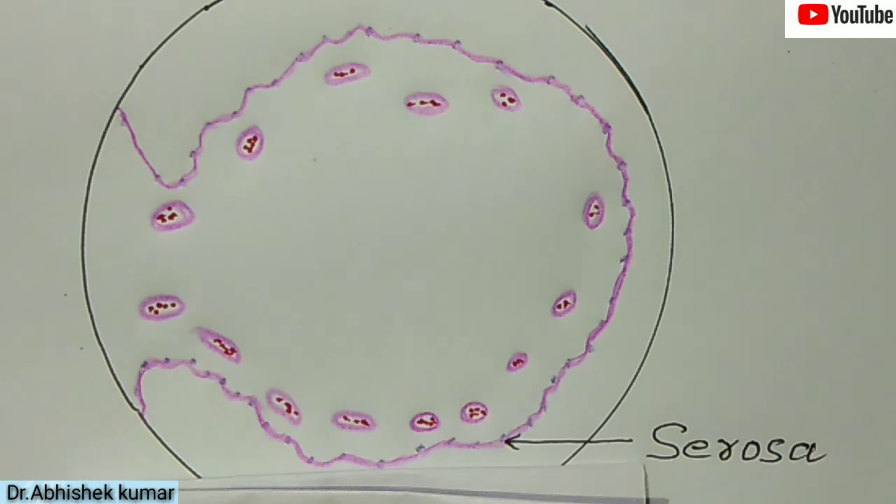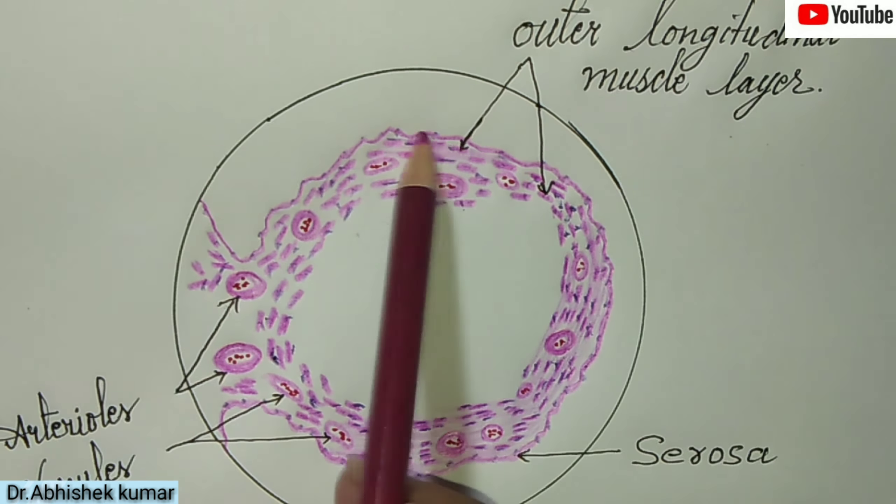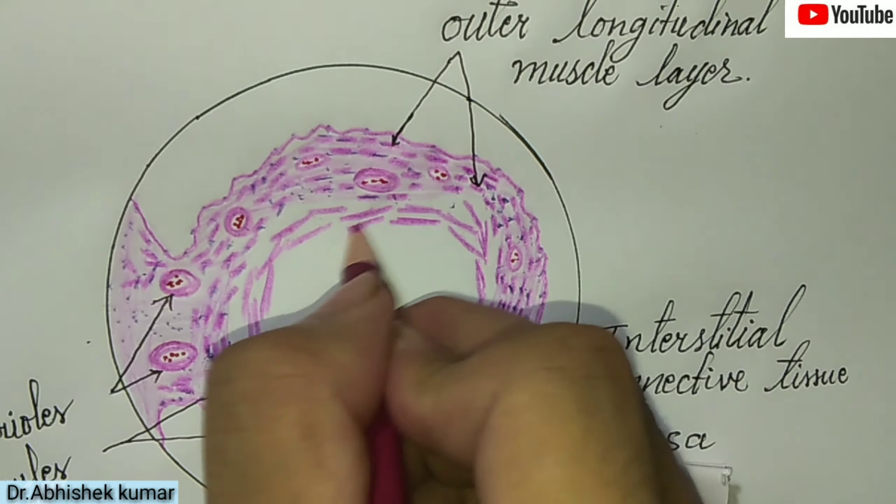Now you can see on your screen that we are marking the outer longitudinal layer. This outer longitudinal layer is separated from the inner circular layer by the interstitial connective tissue. In pink color I am separating the interstitial connective tissue, which separates the inner circular layer and the outer longitudinal muscle layer.